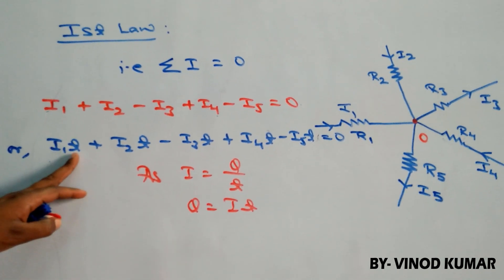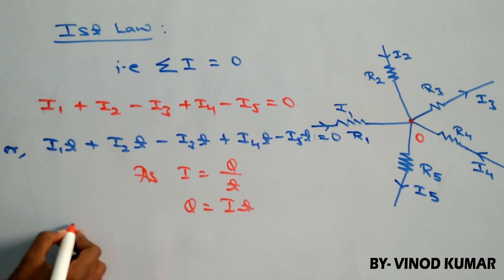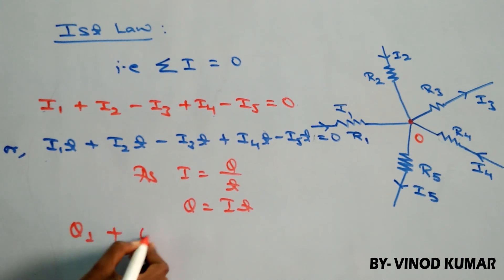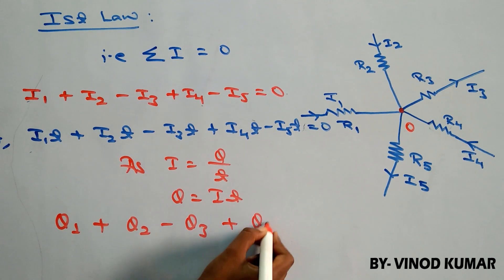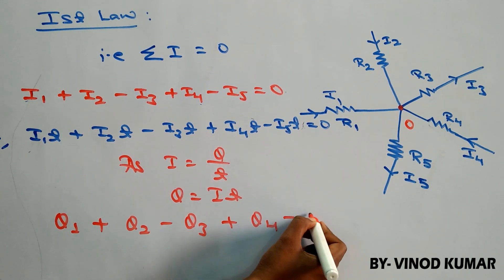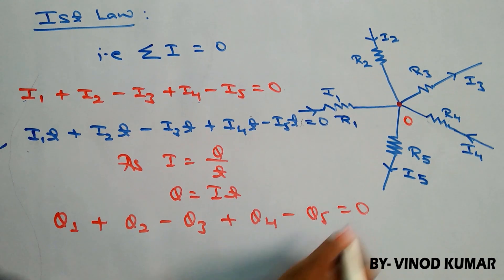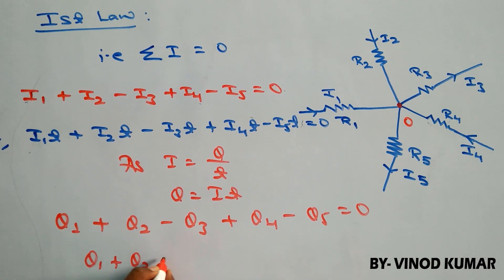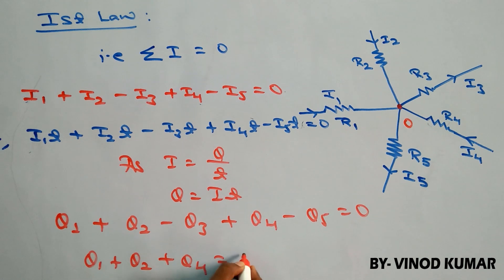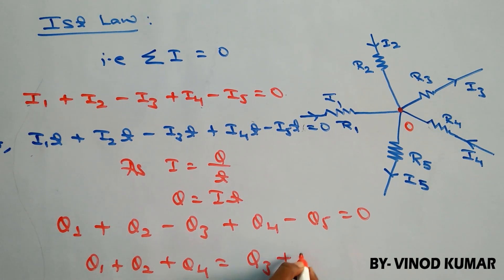So, I1t is a type of charge that is Q1 plus Q2 minus Q3 plus Q4 minus Q5 equals to zero. We can take all the negative to that side. So, Q1 plus Q2 plus Q4 is equals to Q3 plus Q5.